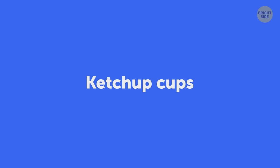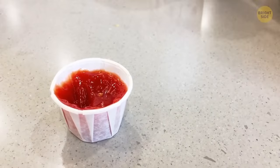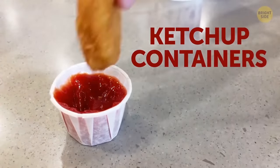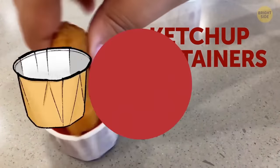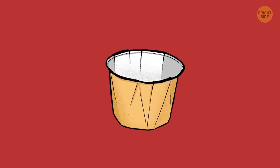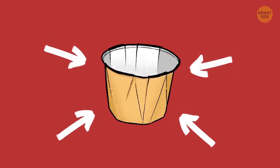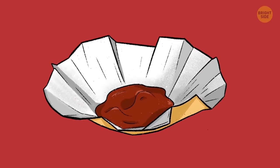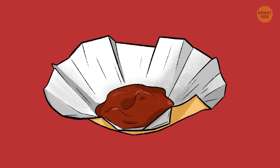If you ever use those flimsy ribbed ketchup containers they have at fast food restaurants, you've probably wondered why they don't make them a bit bigger. What most people don't know, though, is that those ribs should be pulled outward. Thanks to this trick, the container can house way more sauce.